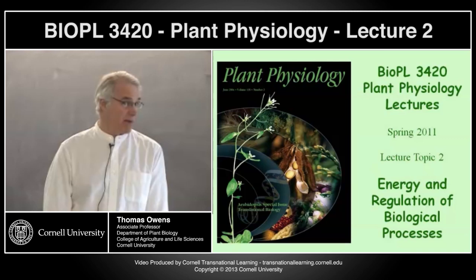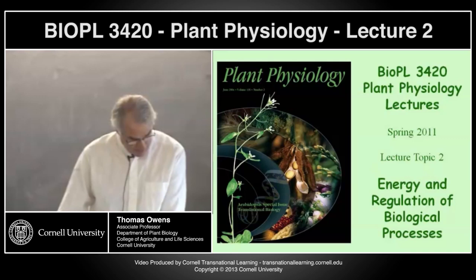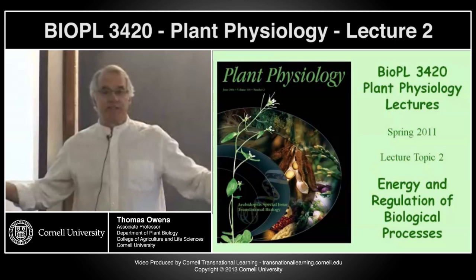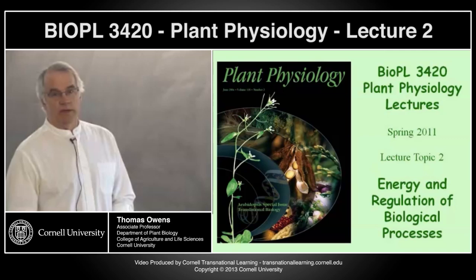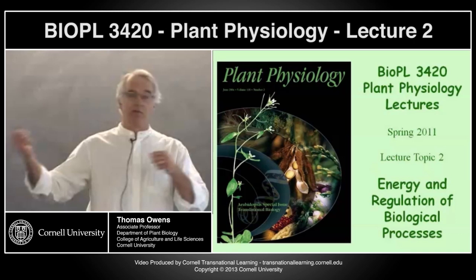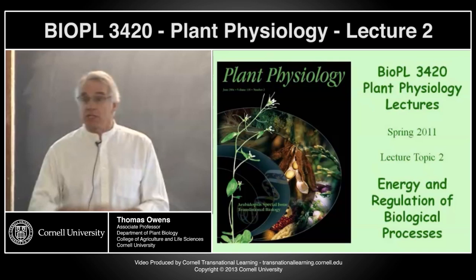This stuff is going to come up again and again over the course of the semester. If you're having problems with it, come see me or Simon during office hours. Don't let it go. Plant physiology is basically everything that happens in a plant, and everything that happens in a plant is determined by chemical reactions. Chemical reactions are at least in theory reversible — they can go from reactants to products or from products to reactants, depending on characteristics of the environment. These reactions can go slowly or not at all or very quickly.